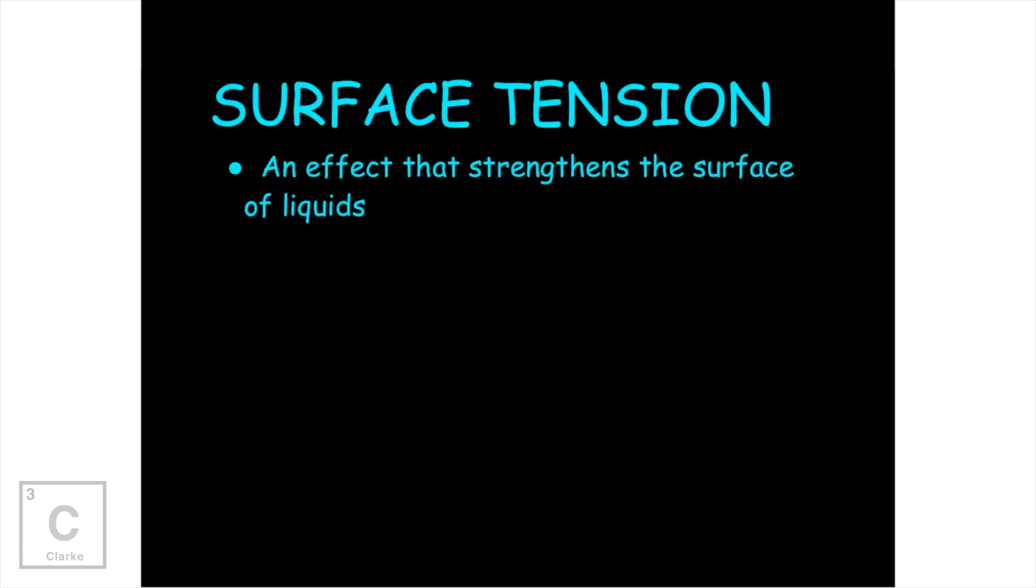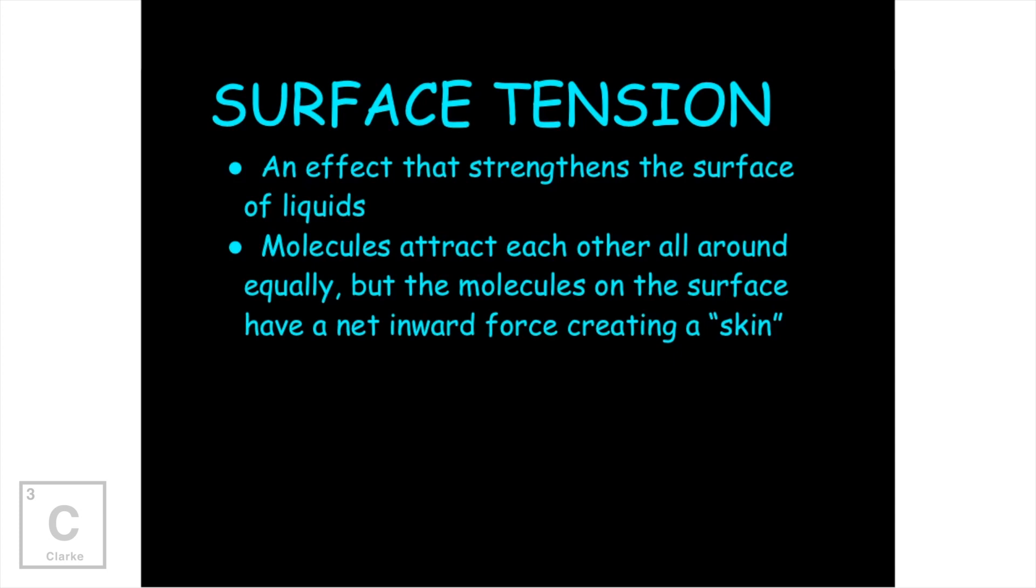Okay, so our next property of liquids we're going to talk about is surface tension. Now surface tension can get pretty complex and I tried to break it down as easy as I could to make it the most understandable. But surface tension is an effect that strengthens the surface of a liquid. So the reason why the surface is strengthened is because the molecules attract each other all around. But the molecules at the surface, at the top, they're going to only have molecules to attract on either side and below. I'm going to explain this a little bit better in just a second. Just remember that the molecules attract each other all around equally, but the molecules on the surface have a net inward force, creating what we would call like a skin.